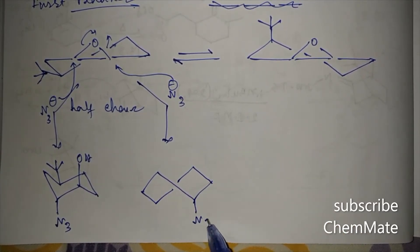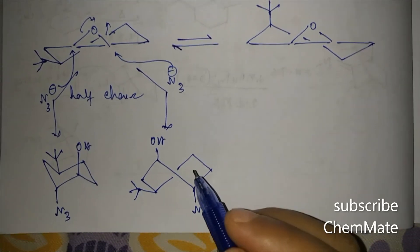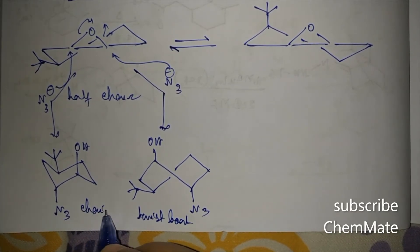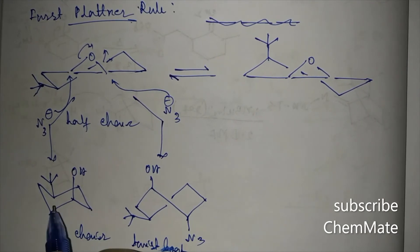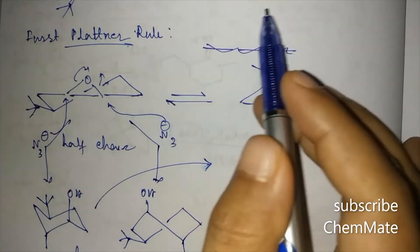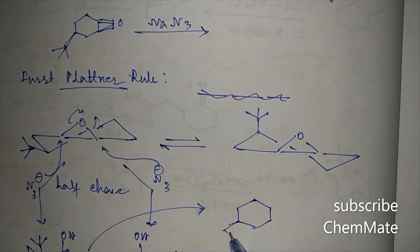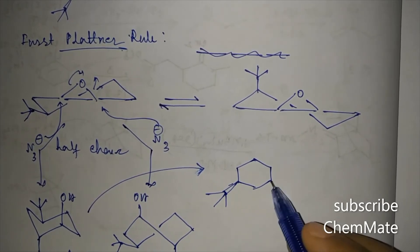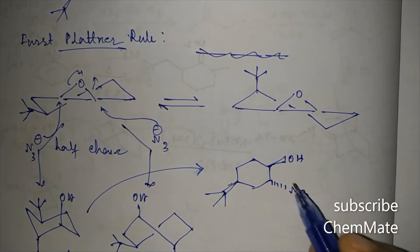The twist-boat conformation is less stable than the diaxial chair conformation, so N3 minus preferentially attacks at the position giving the diaxial chair. Converting back to the flat representation: the tertiary butyl group is equatorial, N3 is below the plane on one carbon, and OH is above the plane on the adjacent carbon. This is the major product.